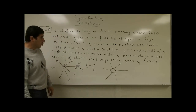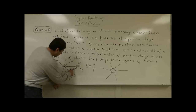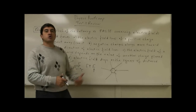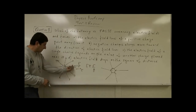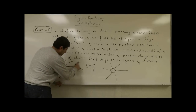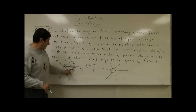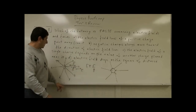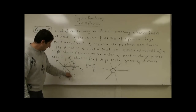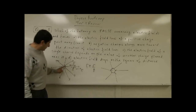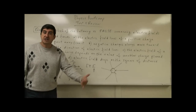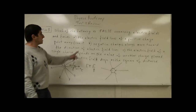B says negative charges always move toward the direction of electric field lines. If I put a negative charge near a positive charge, just think about it from the point of view of forces — the positive charge is going to attract the negative charge, so the force on the negative is going to be to the left. The electric field of the positive charge points to the right, and the negative charge is moving opposite to the direction of the electric field. So this statement is false.